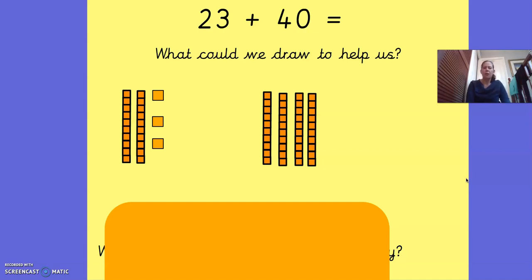So here we are, we've got 23 plus 40. So 23, 33, 43, 53, 63. So 23 plus 40 equals 63. Well done if you've managed to do that one.